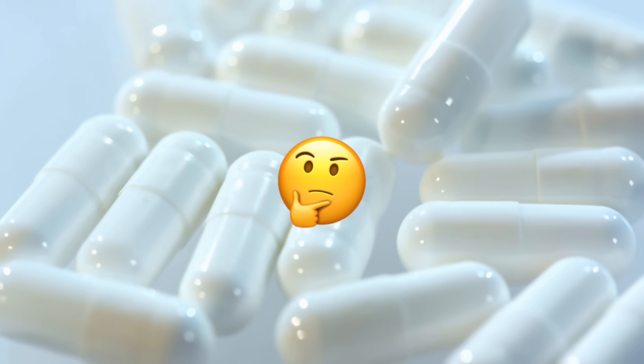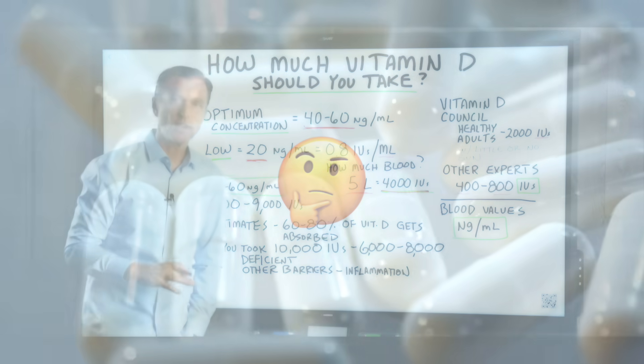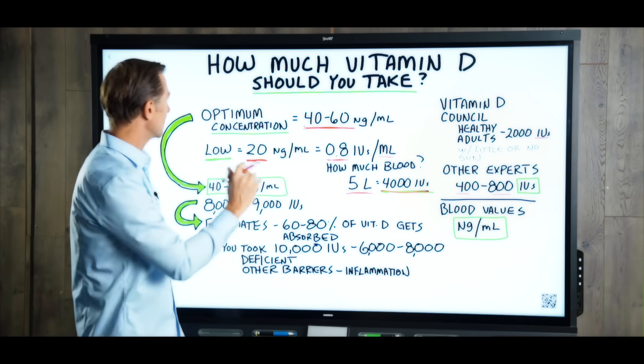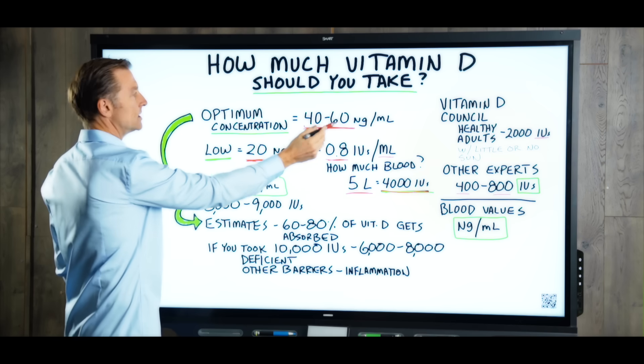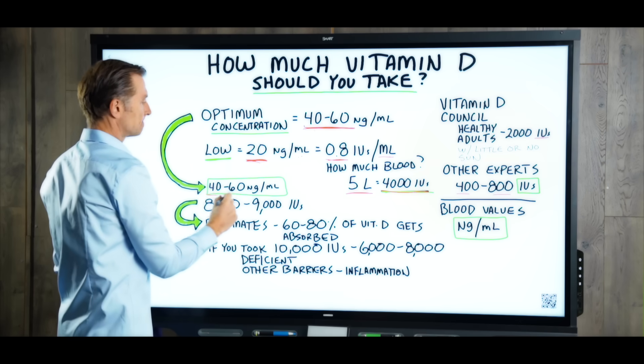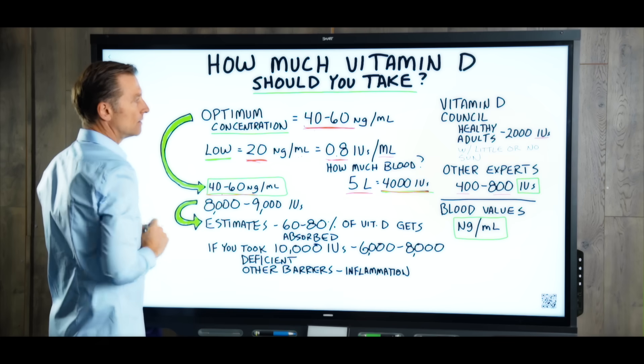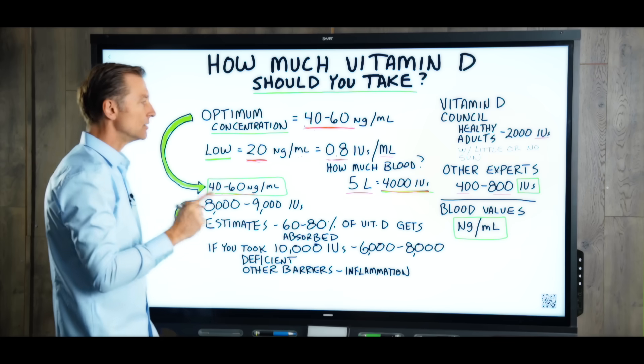There's some conflicting information here, isn't there? All right. So just keep tracking with me here, because if we take the optimum concentration, which is 40 to 60, how much vitamin D is this in international units?